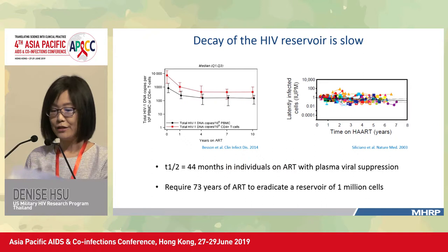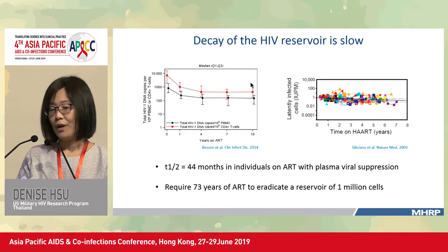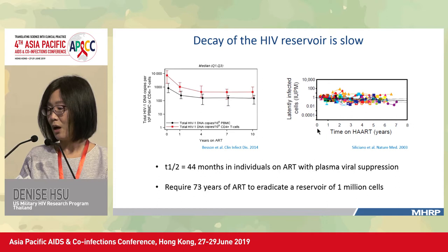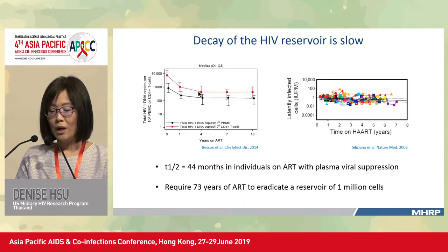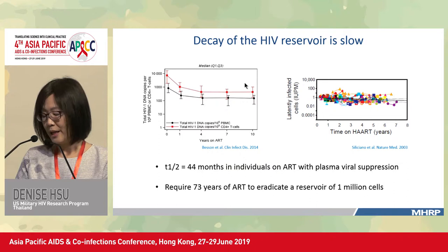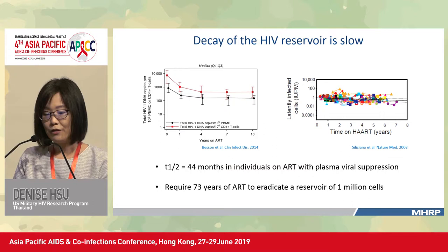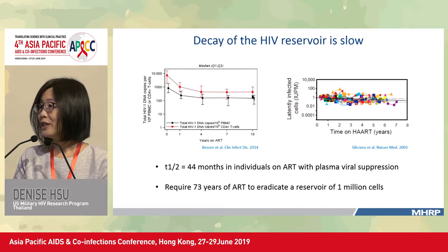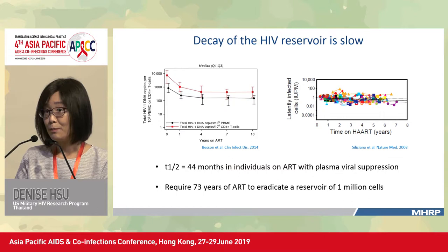Looking at the effect of ART on the latent reservoir: at ART initiation, total copies of HIV DNA in CD4 T cells were about 7,000, dropping rapidly to 1,000 within a year and then to 500 at about four years, subsequently remaining very stable — a reduction of about 90%. This is grossly different from what we see with HIV RNA, where there are five to six logs of reduction within six to twelve months.